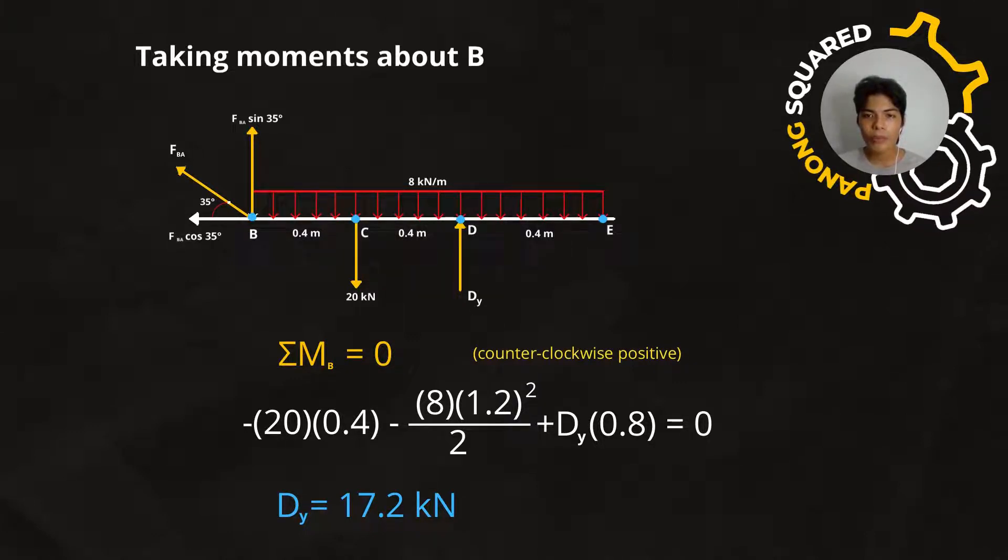Based on our FBD, we can determine the moments by multiplying the force applied by the perpendicular distance from the axis of rotation. To start with, we have at point C, a force of negative 20 kilonewtons times 0.4 meters, that's the distance from point B to C, minus 8 kilonewtons per meter, that's the distributed load for every meter from B to E.